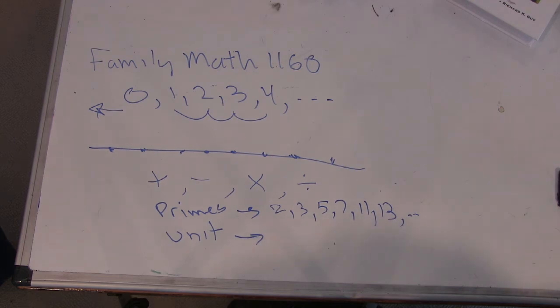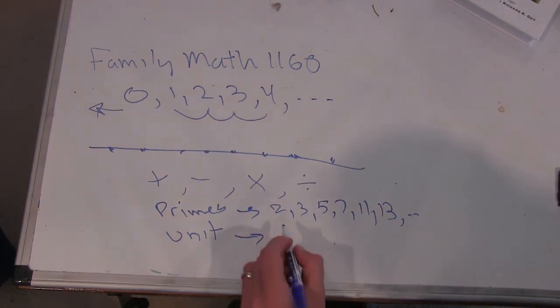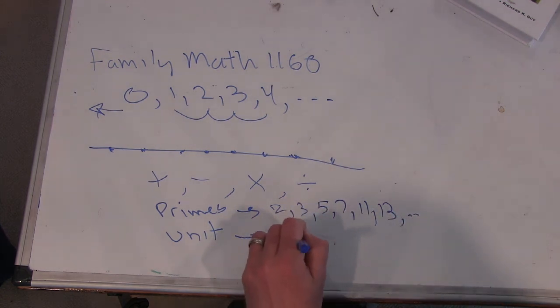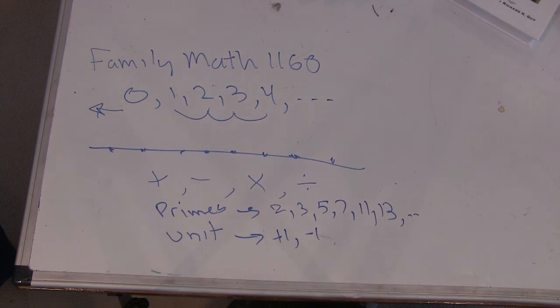Think of them as being one unit away from the origin. One and negative one. One and minus one. Sorry, I meant to write plus one and minus one. Plus one and minus one are the two units.